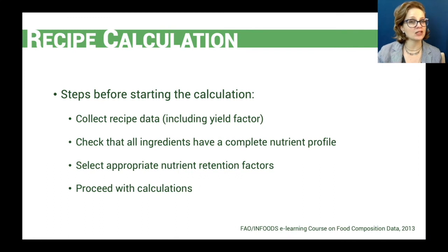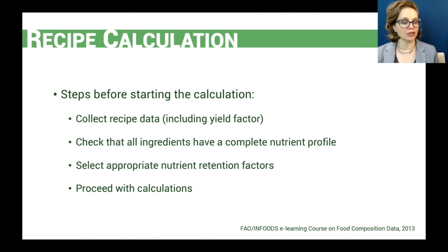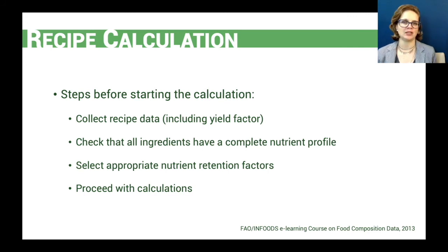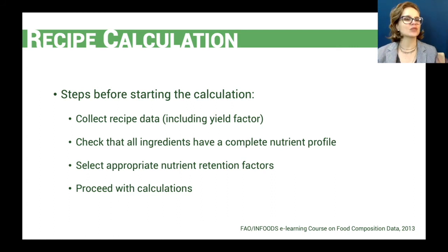To summarize what we have discussed: before calculating the nutrient content of a recipe, first we collect the recipe data including the amount of each ingredient and the yield factor. Then we check that we have the complete nutrient profile for all ingredients. If updating or developing a new food composition table, this is a final step requiring the nutrient content for each ingredient to be checked and finalized. Then we select the appropriate nutrient retention factors for each ingredient and proceed with the calculations.